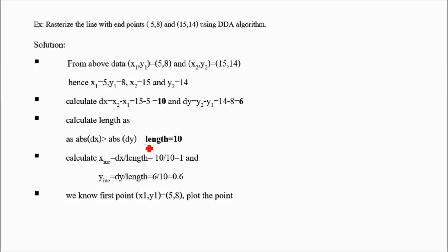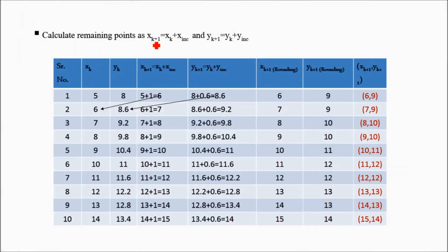After calculation of length, x increment, and y increment, we will move towards next calculation. Those are recursive calculations of x of k plus 1 and y of k plus 1. x of k plus 1 equals x of k plus x increment, where x of k is the present value. This is the increment factor and this is the future value. Initially x of k is 5, y of k is 8. x of k plus 1 equals 5 plus 1, this is the increment in x, so that will become 6.